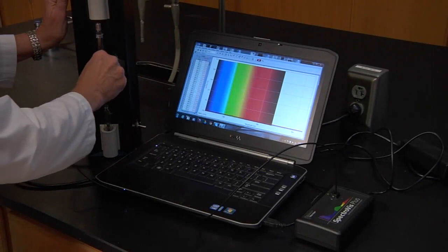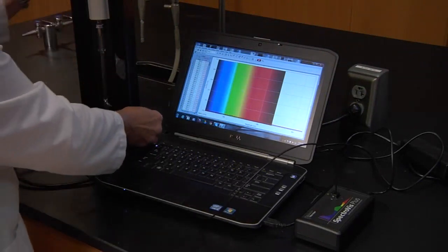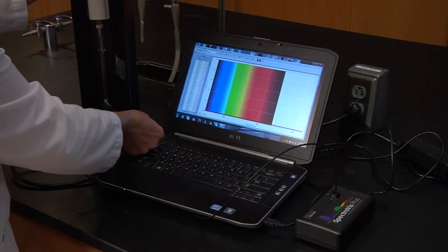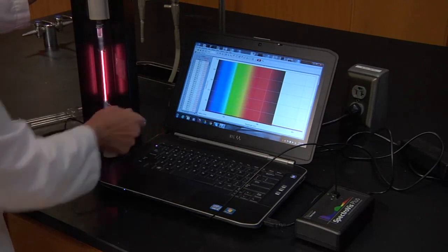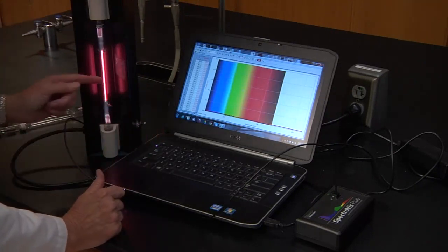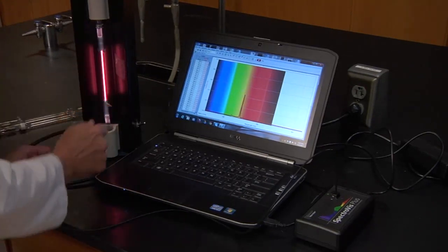Now we're going to use helium and look at the wavelengths that are emitted by excited atoms of helium. Visually, you can see there is a different color. So what are the colors that make that up?